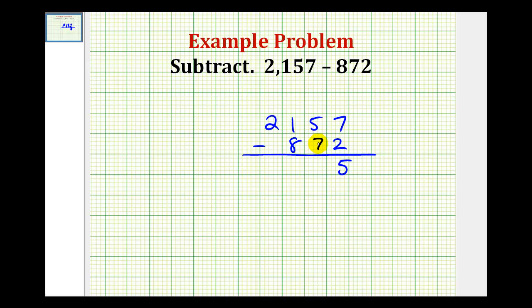But notice in the tens place value we have 5 minus 7. We can't take away 7 from 5, so we have to borrow from the hundreds.